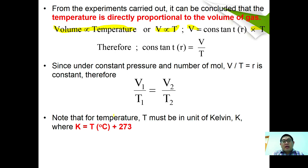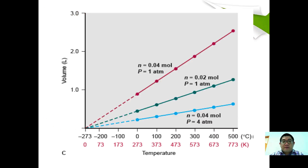Note that temperature must be in units of Kelvin, where Kelvin equals the temperature in degrees Celsius plus 273. The reason for this conversion relates to absolute zero.